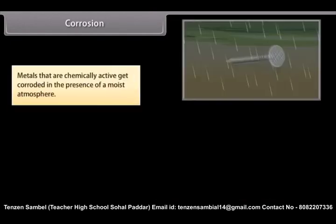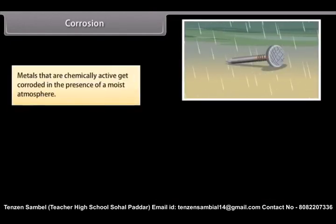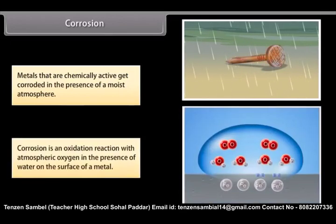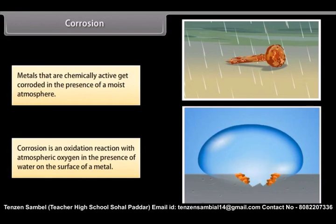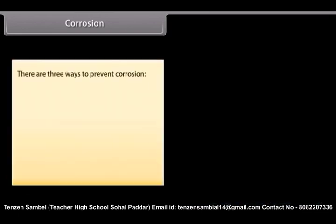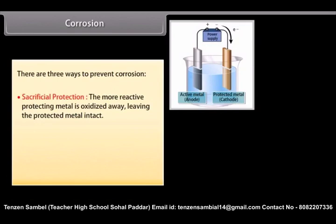Corrosion. Metals that are chemically active get corroded in the presence of a moist atmosphere. Corrosion is an oxidation reaction with atmospheric oxygen in the presence of water on the surface of a metal. For example, iron and aluminum corrode. However, non-reactive metals like gold, platinum, mercury do not corrode. There are three ways to prevent corrosion.